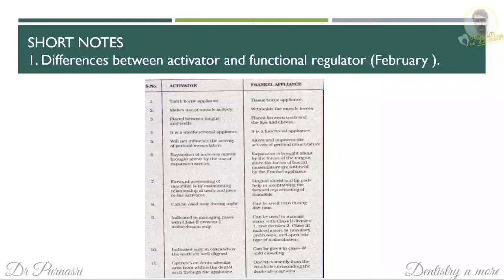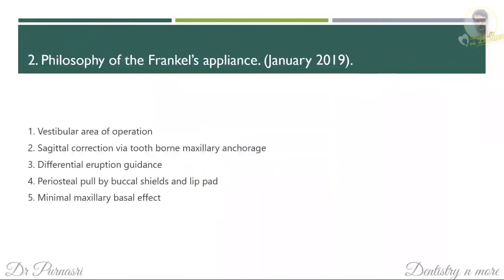The philosophy of the Frankel appliance consists of five points: vestibular area of operation; sagittal correction via tooth-bone maxillary anchorage; differential eruption guidance; periosteal pull by the buccal shields and lip pads; and minimal maxillary basal effect. These five points are the philosophy of the Frankel appliance.